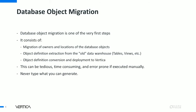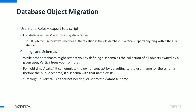Starting with migrating objects is one of the very first steps. It consists of migrating first the containers — owners, locations, which are usually schemas. Then you extract the tables and views, convert the object definitions, and deploy them to Vertica. You shouldn't do this manually — never type what you can generate, automate whatever you can. Users and roles: there is usually a system table in the old database containing all the roles. You can export those to a file, reformat them, and then create a role and user script to apply to Vertica.